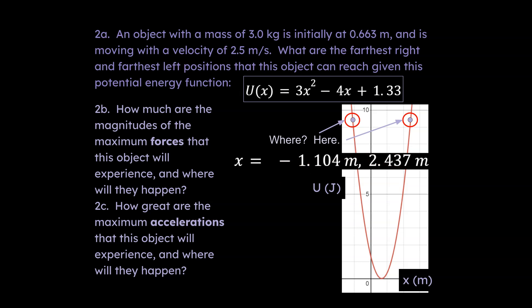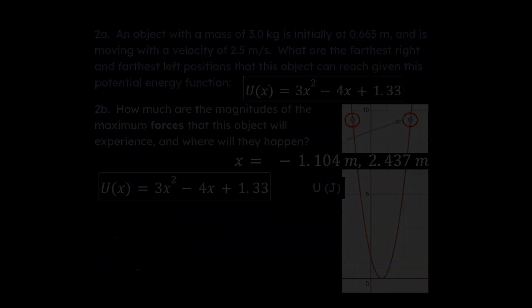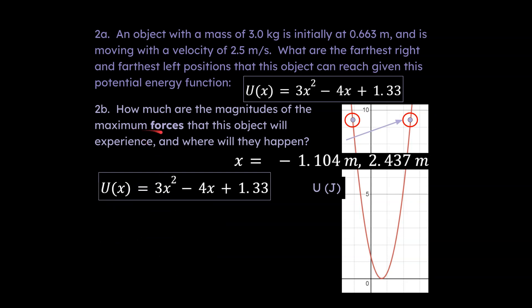The next part of the problem says, how much are the magnitudes of the maximum forces that this object will experience? And part c, how great are the maximum accelerations that this object will experience? And where will these happen? We already know where this is going to happen. This is where we're going to have the maximum force and the maximum acceleration. Remember, net force is the cause of acceleration. Right here and right here, you're going to have the maximum acceleration on the object as it oscillates back and forth between those two positions.